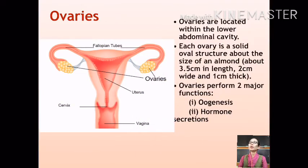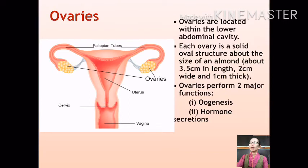The ovaries are the primary female reproductive organs. They lie on either side of the uterus within the lower abdominal cavity and are held in place by ligaments attached to the uterus. An adult ovary is about the size of an almond, approximately 4 centimeters long, 2 centimeters wide, and about 1 centimeter in thickness. The ovaries perform two chief functions: firstly, to produce eggs or ova by a process called oogenesis; and secondly, to produce hormones which regulate the female reproductive system.